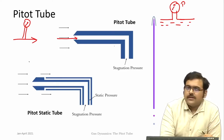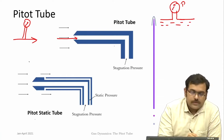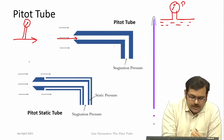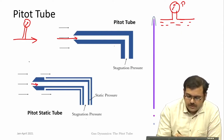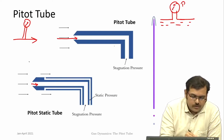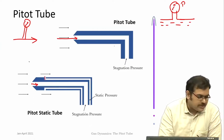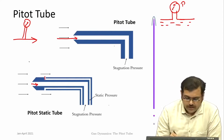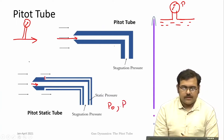You also need information on the static pressure. Often this is done by a combination known as the pitot static tube, which has two ports. The central port is normal to the flow and measures the stagnation pressure, but around the periphery you have holes through which pressure parallel to the flow is measured — that is the static pressure. So in a pitot static tube you measure both stagnation pressure and static pressure.